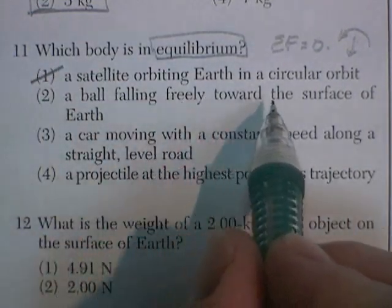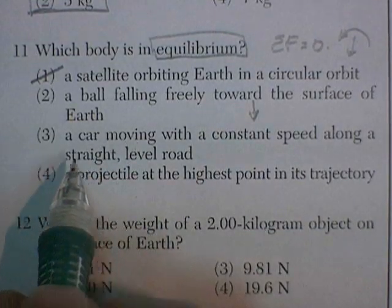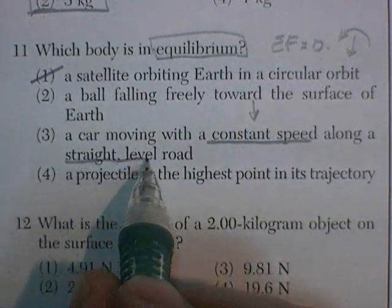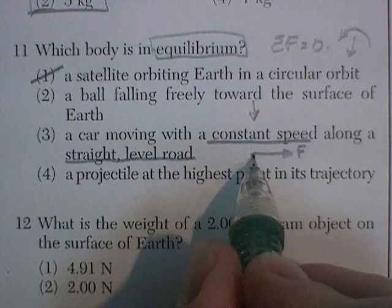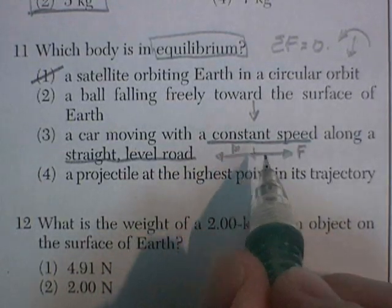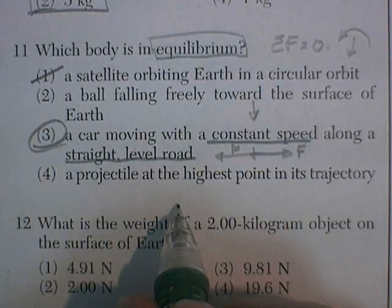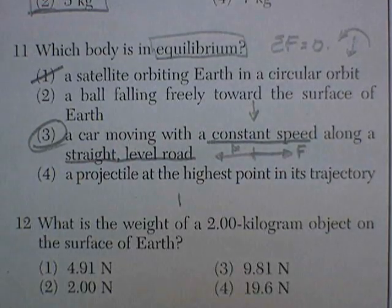A ball falling freely towards the surface of the Earth is in fact accelerating. A car moving with a constant speed along a straight level path. The engine gives it a force in one direction, a force of friction in the other direction. And if it's a constant speed, those two forces are equal. Therefore, this is in equilibrium. A projectile at the highest point in its trajectory is essentially a ball falling freely towards the center of the Earth.